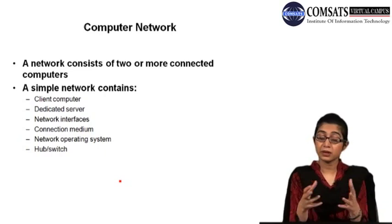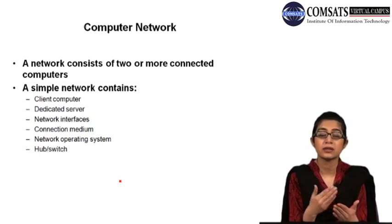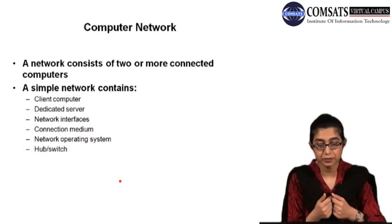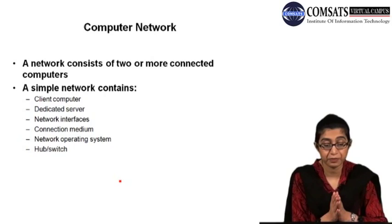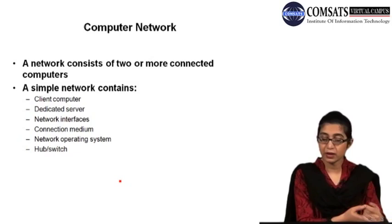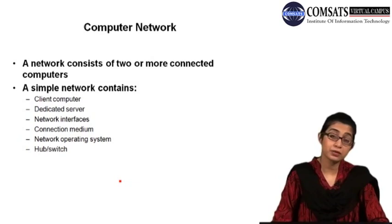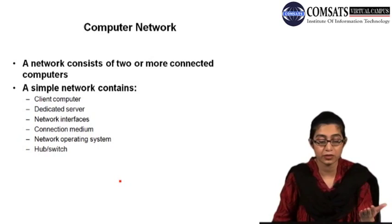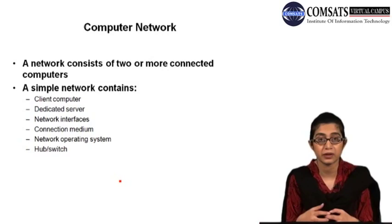Network interfaces means you have the network interface card, or a USB network interface, that allows the computer to connect to the networking devices. Then it consists of a communication medium — either wireless or any kind of physical communication medium. The network operating system depends on the kind of network created: it would be on the servers, or if you're using a different kind of setup, the network operating system would be on all the computers. You can use either a hub, switch, or router — all of these devices are used to provide connectivity between different computers, and a router is used to route traffic from one kind of network to another.